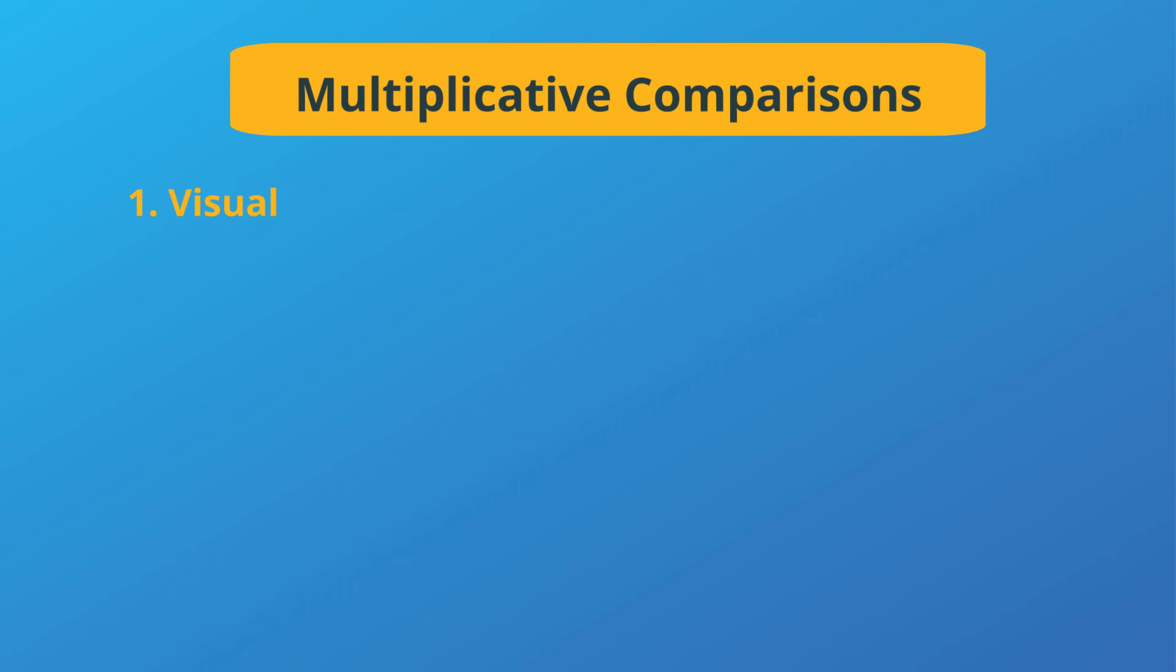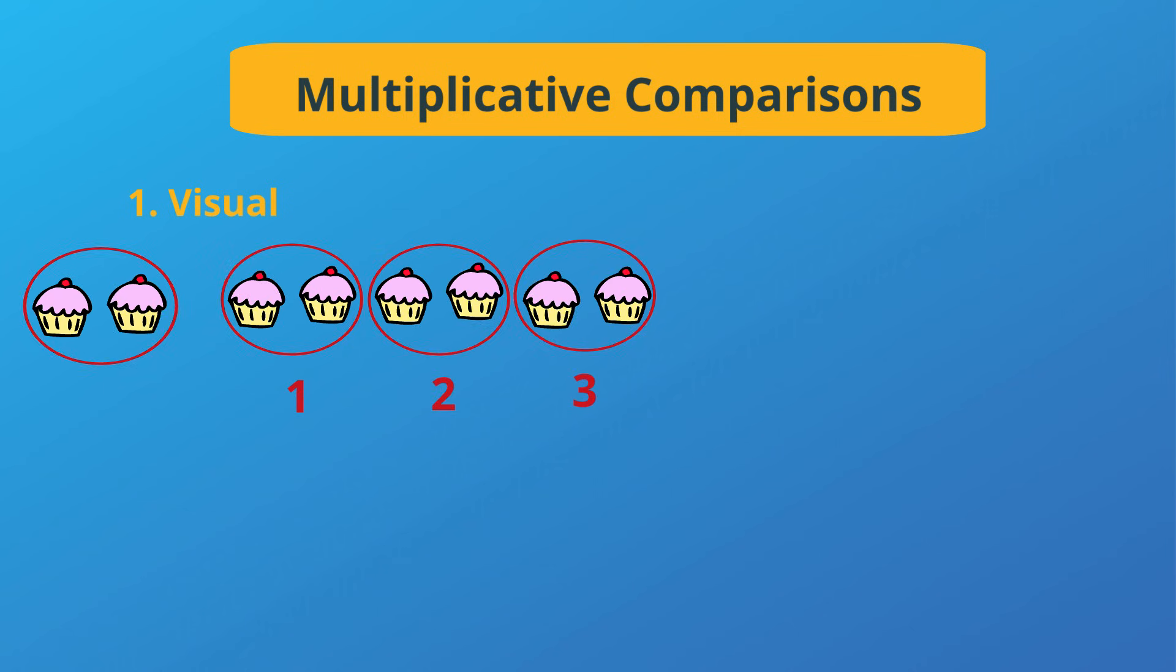First, you can use a visual like with the treats. You can draw or see how many times more of one group you have than another.